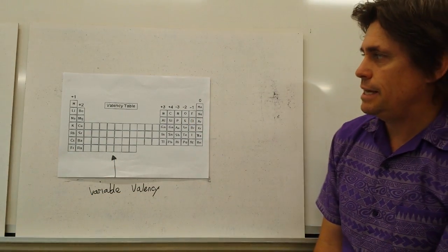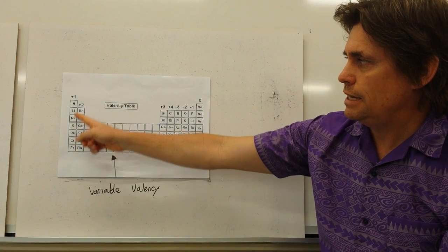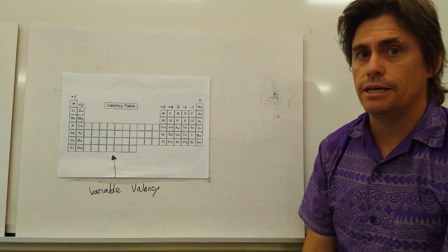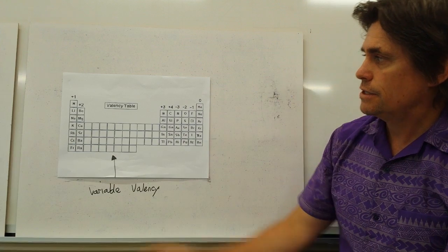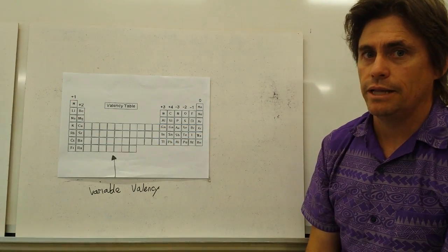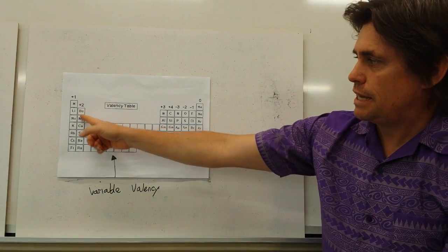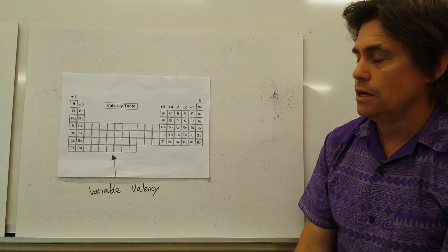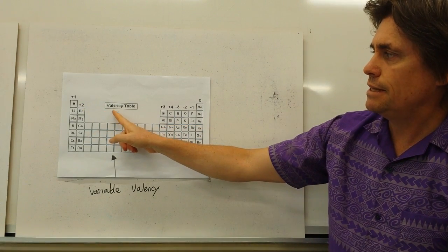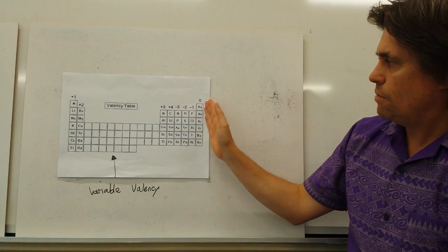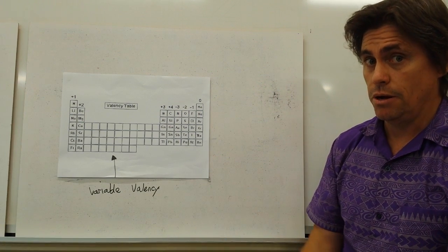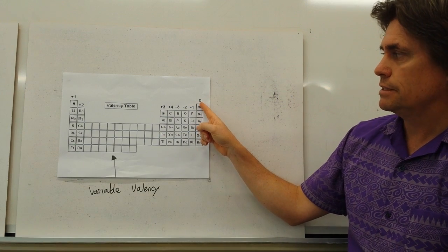Looking at our periodic table, at the far left-hand side, hydrogen, lithium, sodium, potassium, etc., all have a tendency to lose one electron when they combine in a chemical compound. So all of these elements have a valency of plus one. Our second column, the alkaline earth metals, will all have a tendency to lose two electrons when they form compounds, so their valency is plus two. At the far right-hand side, our unreactive noble gases don't lose or gain electrons and don't combine with other atoms, so we say they have a valency of zero.